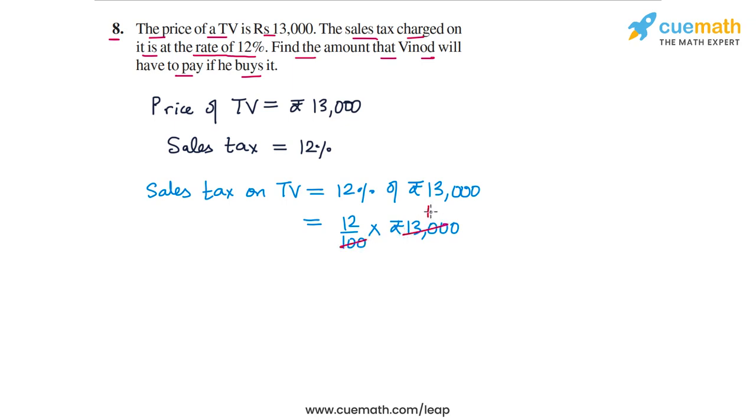And this will be equal to how much? 13,000 by 100 is 130. 130 into 12 is 1560. So rupees 1560 will be the amount of sales tax on the TV.